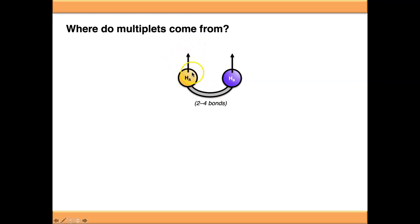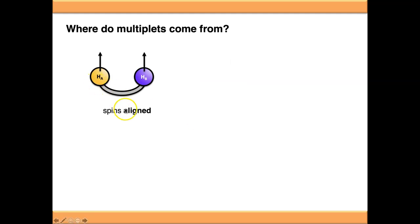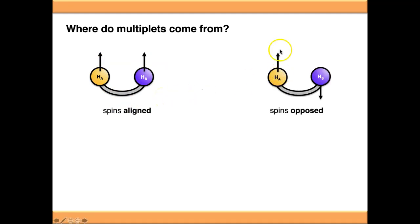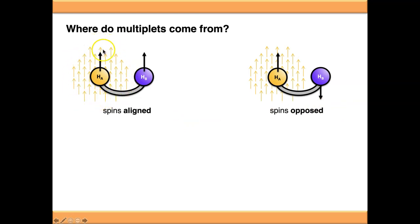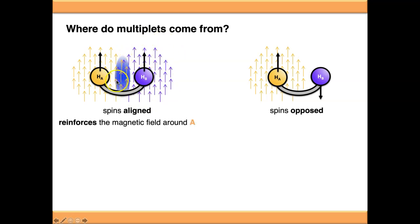I've denoted the spin of the nuclei with an arrow. There are two possible arrangements for this system: the two spins aligned with each other (both up or both down), or the spins opposed. A spinning nucleus generates its own small magnetic field. If the spins are aligned, the magnetic field of HB points in the same direction as HA, and we end up with a region in the middle where the magnetic field is reinforced — constructive interaction.